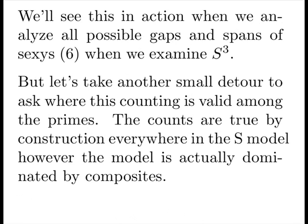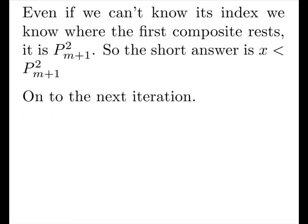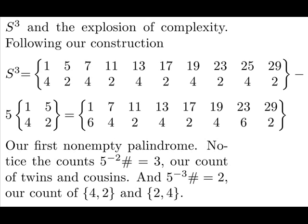We'll see this in action when we analyze all possible gaps and spans of sexes when we examine S3. But let's take another small detour to ask where this counting is valid among the primes. The counts are true by construction everywhere in the S model. However, the model is actually dominated by composites. Even if we can't know its index, we can know where the first composite rests. It's our next prime squared. So the short answer is we're looking at X less than our next prime squared. So here we have S3 and the explosion of complexity. Following our construction, we expand to the next primordial boundary, we subtract 5 times our 2 previous members and we get our 8 expected members. And we get our first non-empty palindrome.